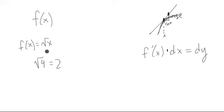Let's try to approximate something nearby 4, maybe like 3.9. What is the square root of 3.9? So we want to know f of 3.9 is approximately what?